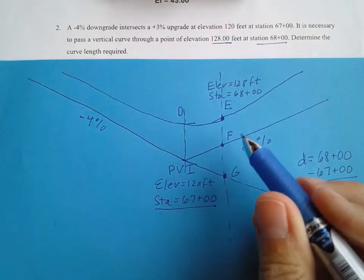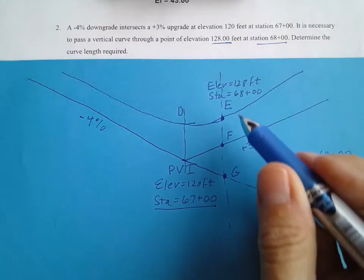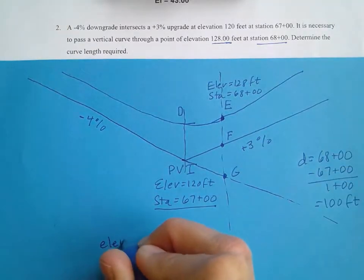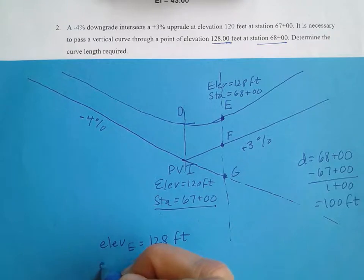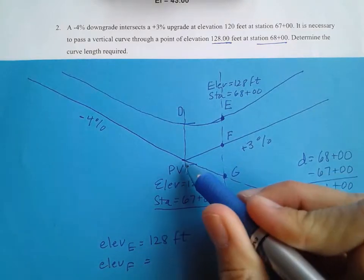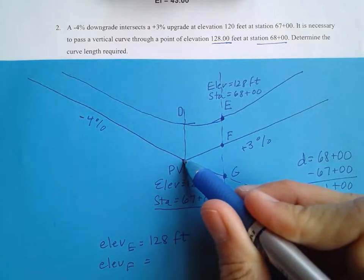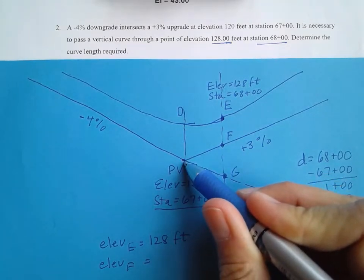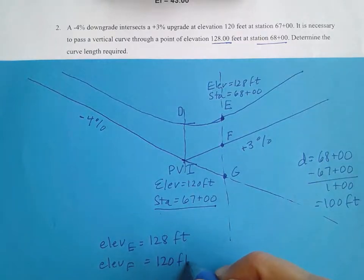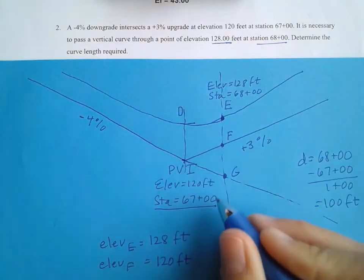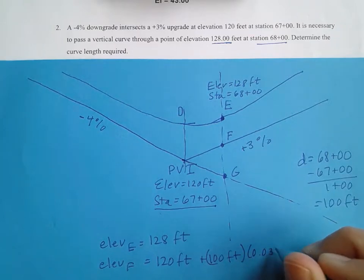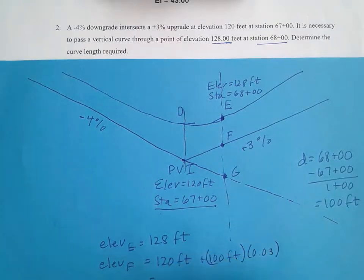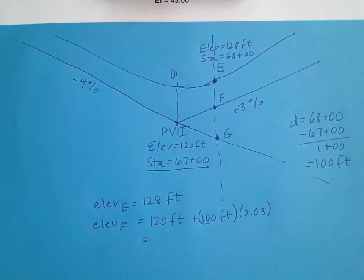To find S, I need the elevations at each of these points. I know the elevation at E — that was given as 128 feet. To find the elevation at F, I follow that 3% grade from the PVI. The PVI elevation is 120 feet, and traveling 100 feet along that +0.03 grade gives an elevation at F of 123 feet.